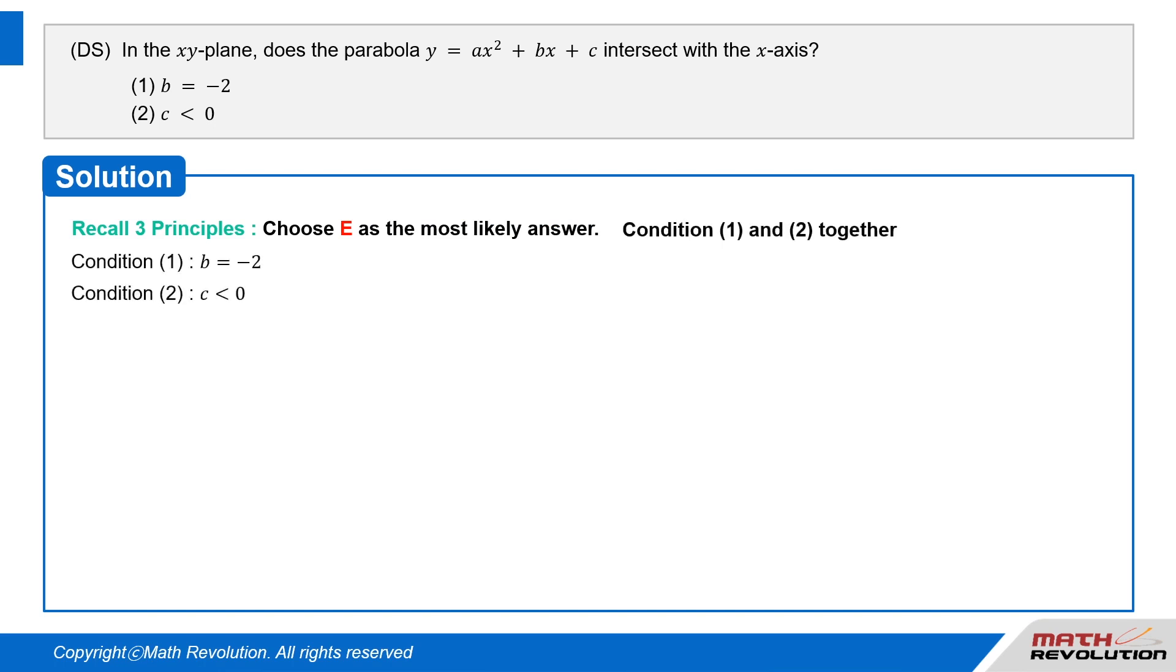Let's take a look at both conditions together. Condition 1 tells us that b equals negative 2 and condition 2 tells us that c is less than zero.